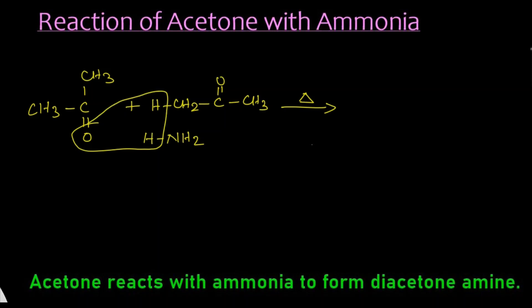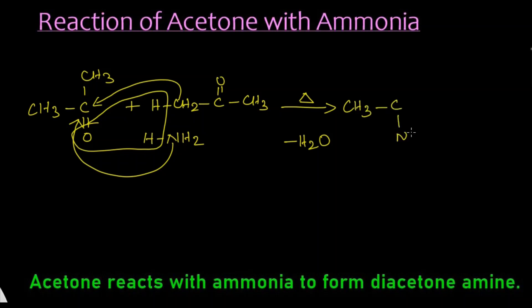What happens is very simple: this oxygen and these two hydrogens get eliminated as a water molecule — H2O is eliminated. The remaining parts get attached: the CH2 gets attached to this carbon, and the NH2 gets attached here. So we get CH3-C(NH2)-CH2-C double bond O-CH3. The name of this compound is diacetone amine.